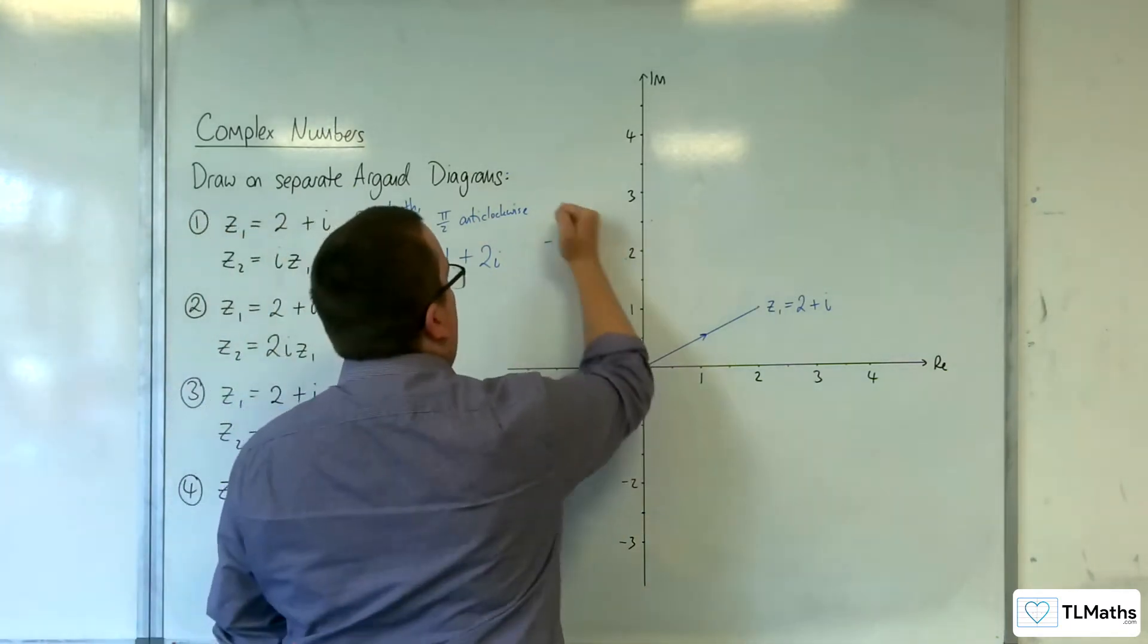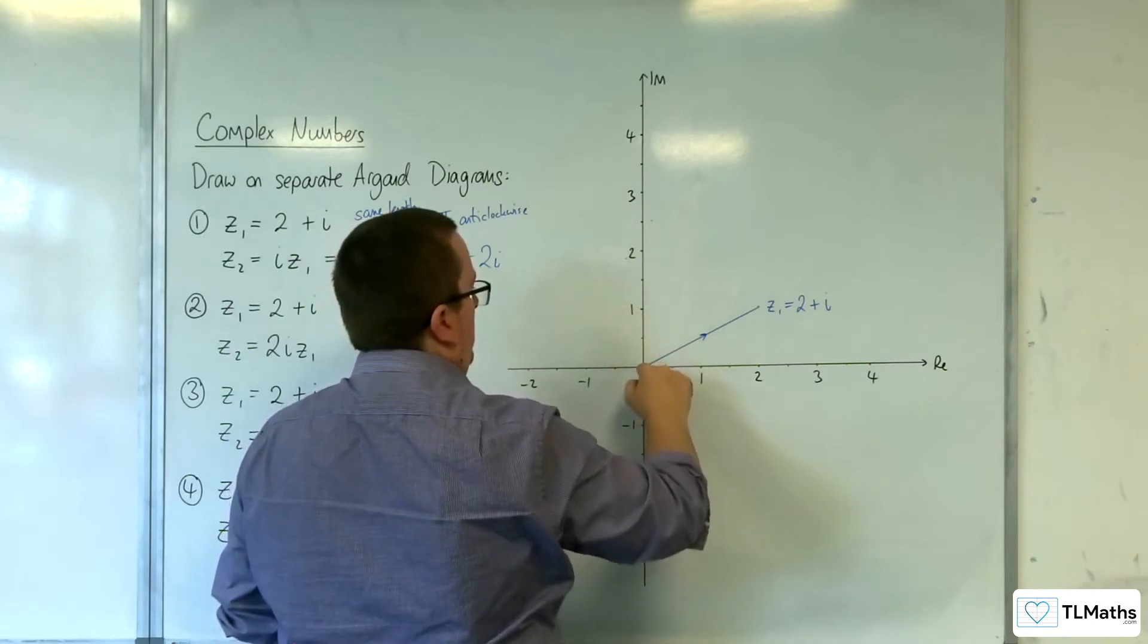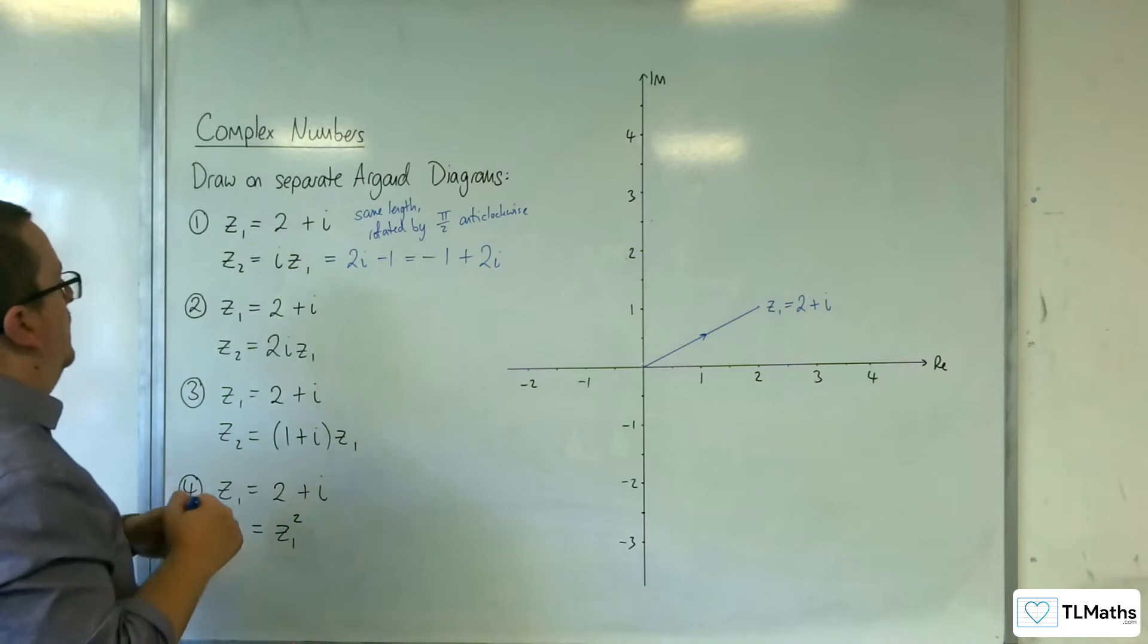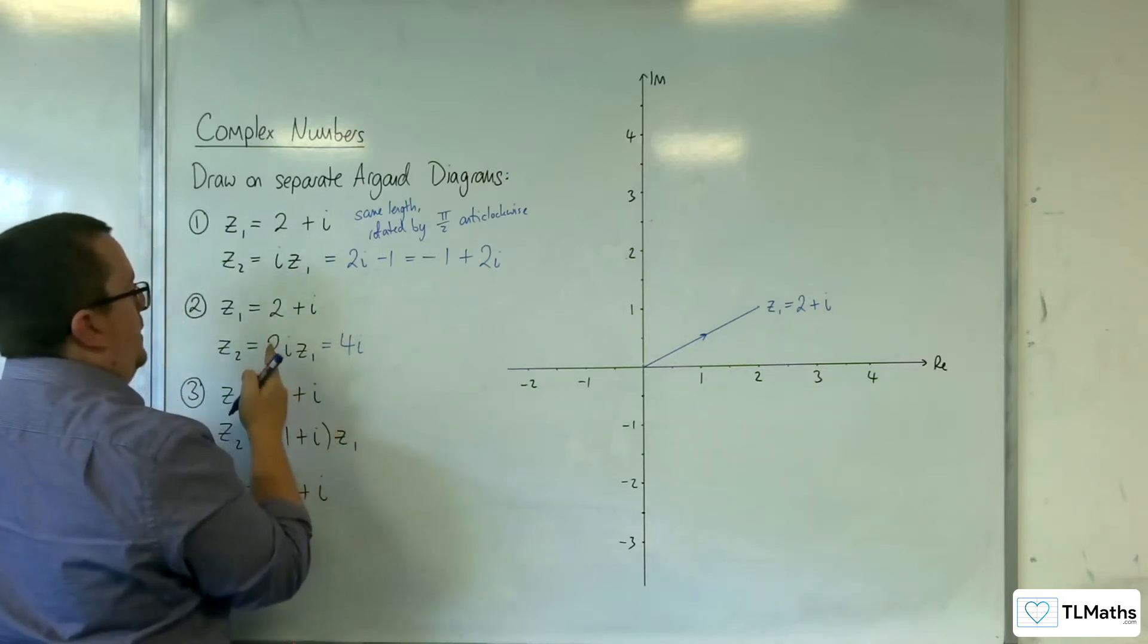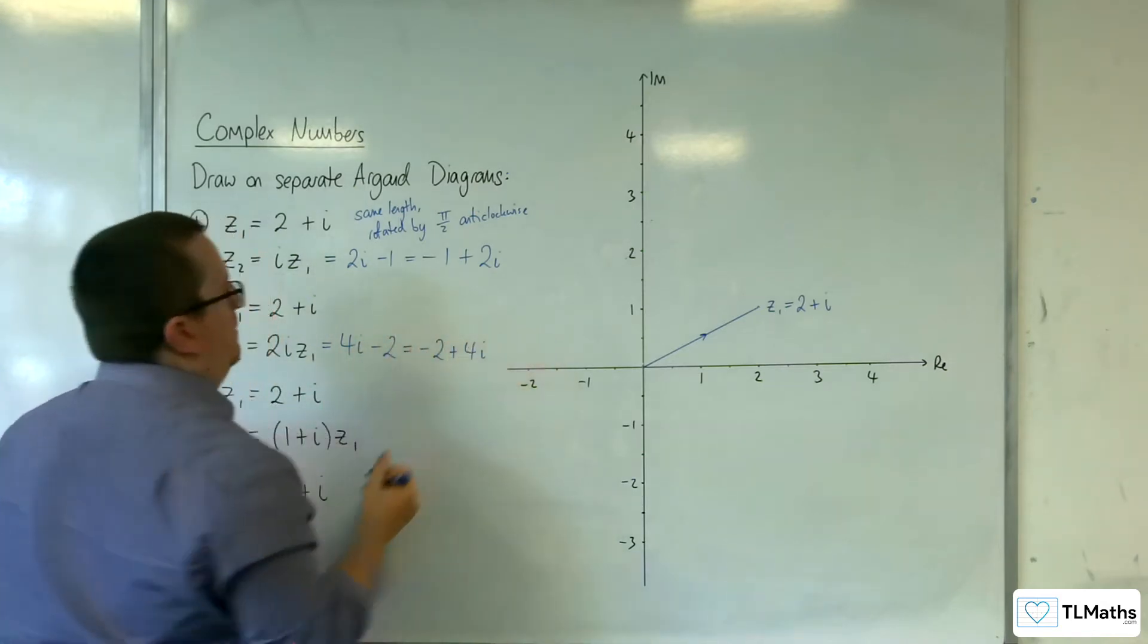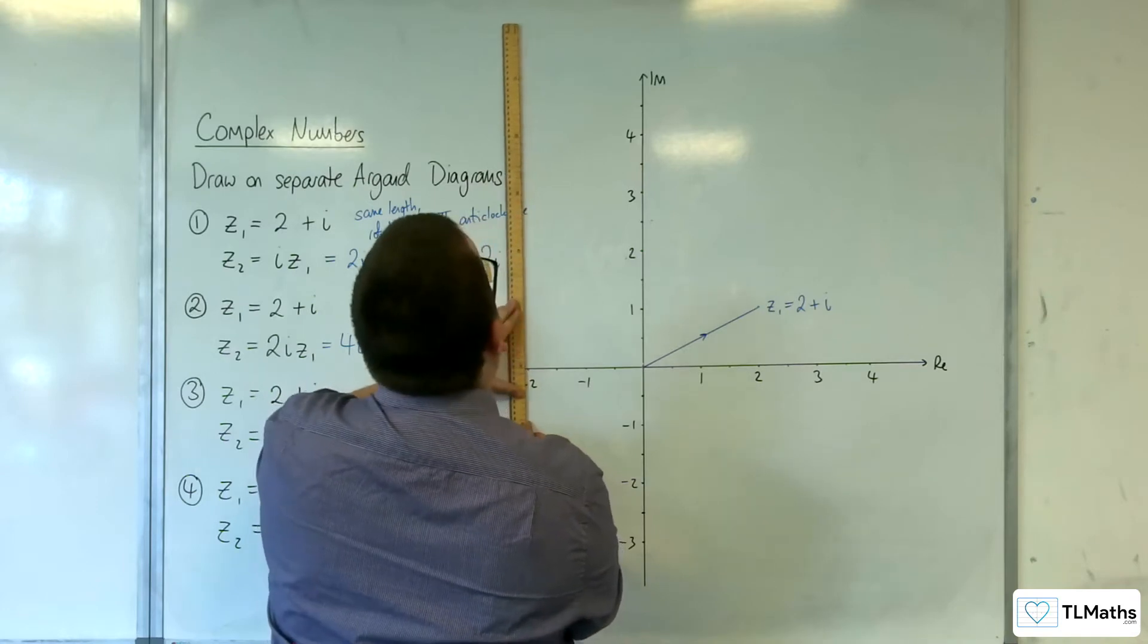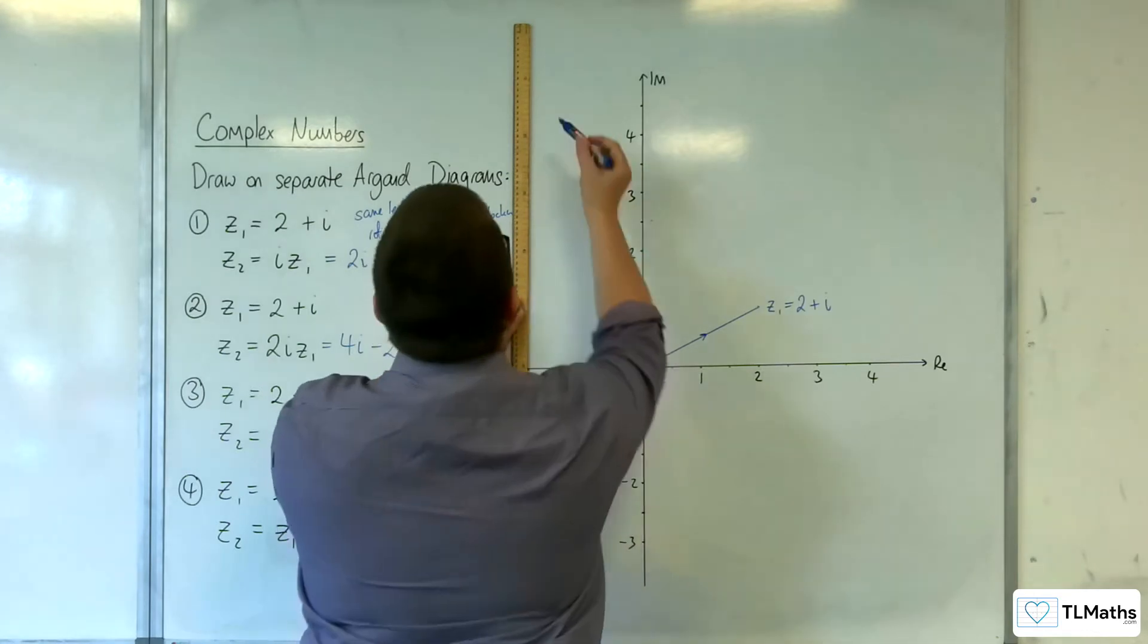Let's look at the next one. Here we've got z₂ is 2i times z₁. So 2i times 2 is 4i, and 2i times i is minus 2. So we get minus 2 plus 4i. Minus 2, and we've got up to 4, so I think it's about there.